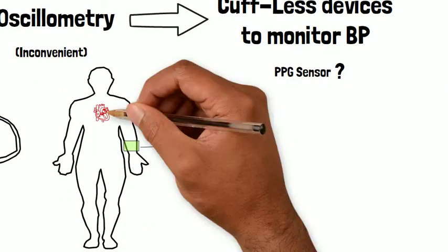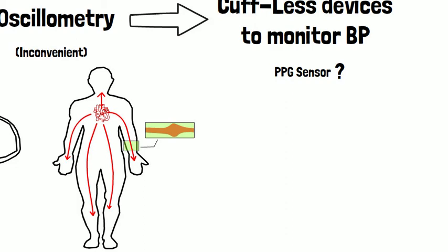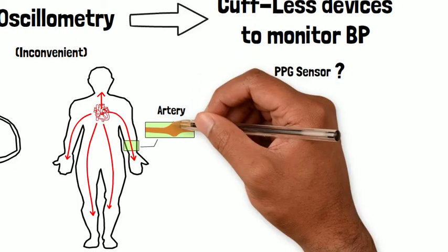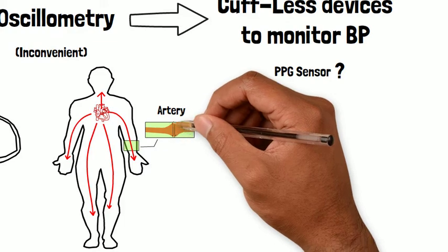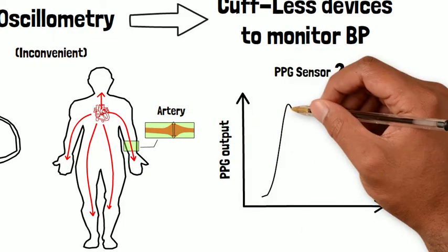When your heart pumps blood, a pressure wave originating from the heart travels along the arterial walls. As these pressure waves propagate, the volume of blood in these arteries pulsates. A PPG sensor records these pulsations using light.